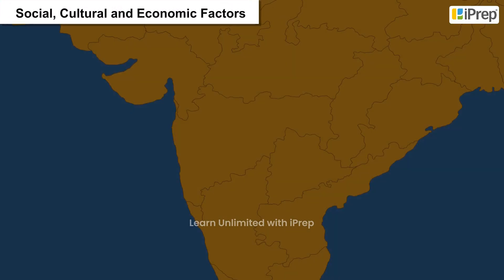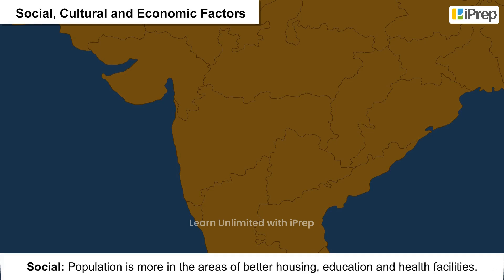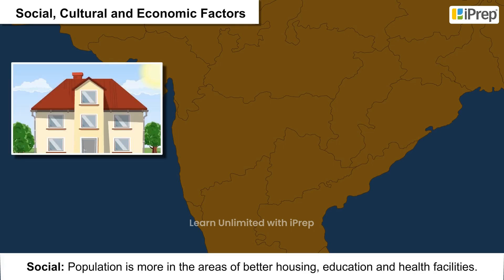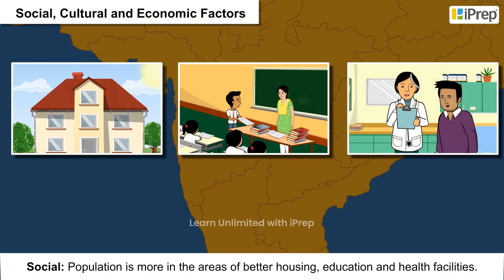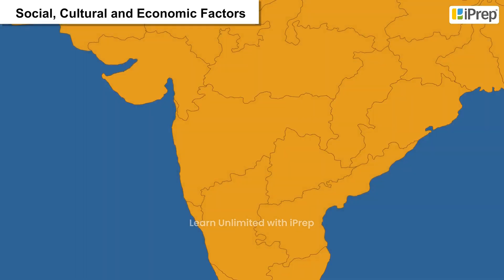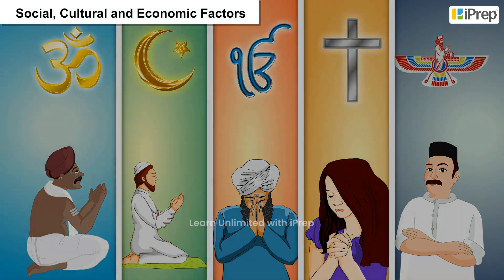Social, Cultural and Economic Factors — Social: Population is more concentrated in areas with better housing, education and health facilities. Example: Pune.